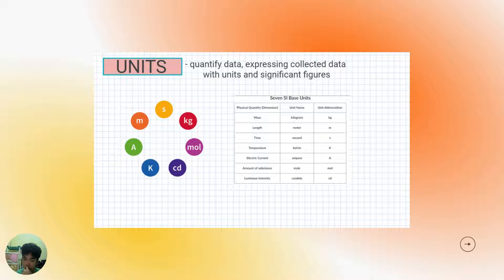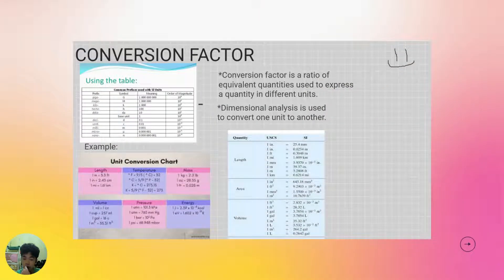Units are used to quantify data, expressing collected data with units in significant figures. Conversion factor is a ratio of equivalent quantities used to express a quantity in different units. Dimensional analysis is used to convert one unit to another.